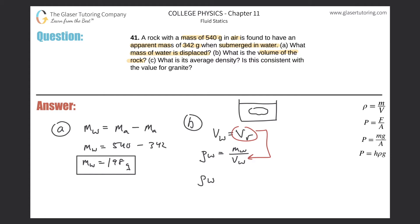So we have now the density of the water will be equal to the mass of the water divided by the volume of the rock. Just doing some algebra, the volume of the rock will be equal to the mass of the water divided by the density of the water.